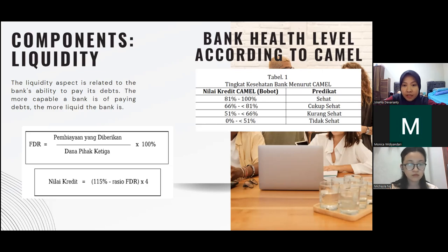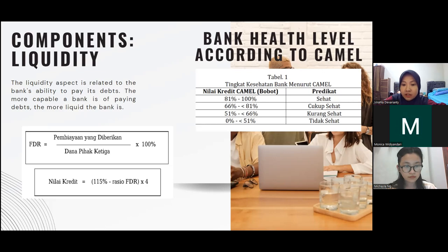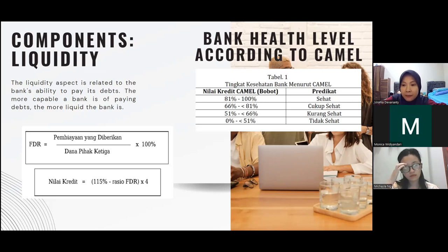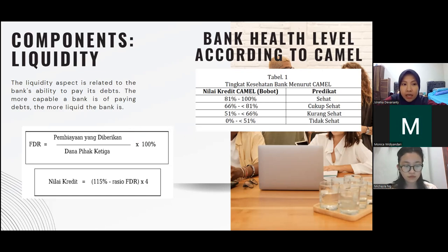Based on the formulas explained, this is the bank health level table according to CAMEL. The first category is 0% to less than 51%, which is categorized as unhealthy. Then, as you can see, there are also categories for less healthy, healthy, and so on. That is all for Verania's explanation. The next explanation will be presented by Mikayla.